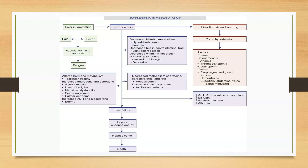Necrosis also causes increased urobilinogen, leading to dark urine. There is decreased metabolism of proteins, carbohydrates, and fats, resulting in hypoglycemia, decreased plasma proteins, ascites, and edema. These lead to various clinical manifestations. Further progression can lead to liver failure, hepatic encephalopathy, hepatic coma, and ultimately death if untreated.